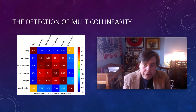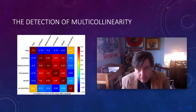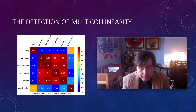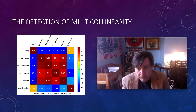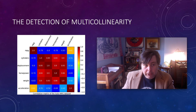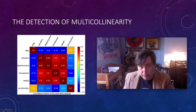Here we see an example correlation matrix with variables: miles per gallon, number of cylinders, engine displacement, horsepower, vehicle weight, and acceleration. Down the diagonal, all values are 1.0 — because miles per gallon is perfectly correlated with miles per gallon, cylinders with cylinders, and so on. That gives you a sense of how to read the matrix.